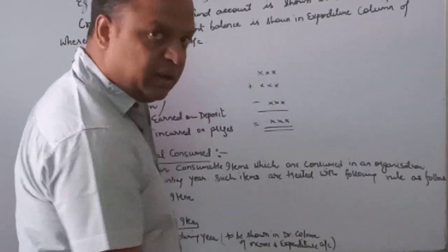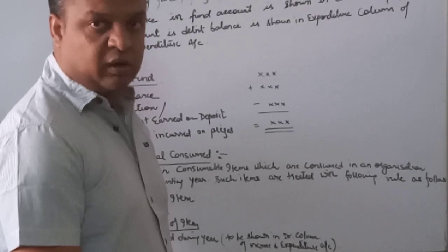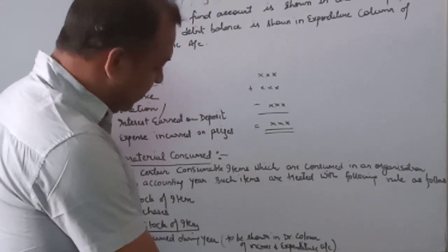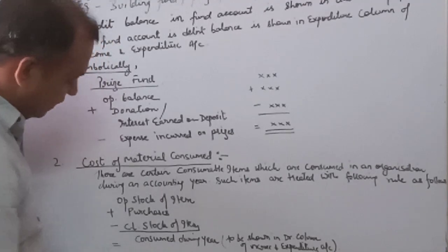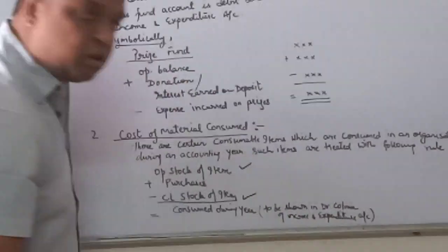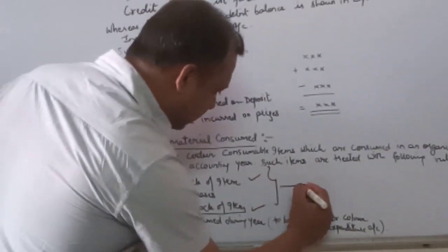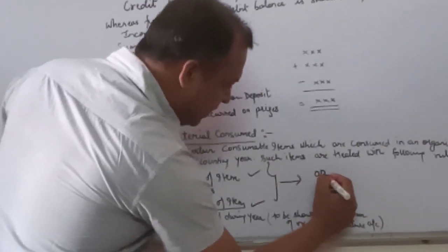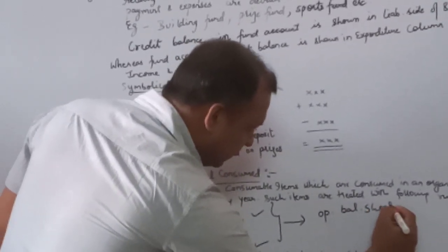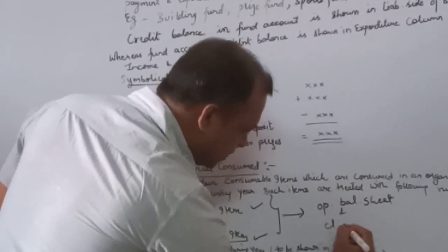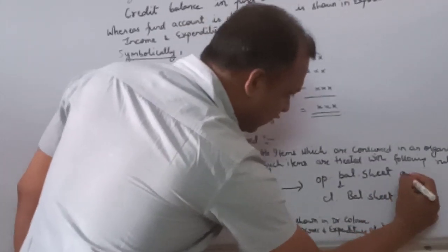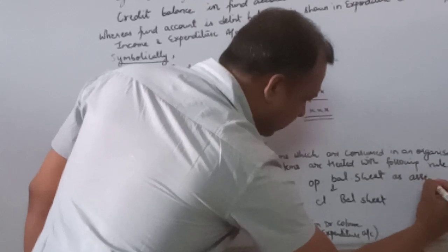The balance of income and expenditure account has been shown. The balance of the opening stock of item and closing stock of item will be reflected in the opening balance sheet and closing balance sheet as asset.